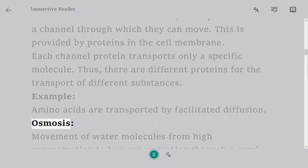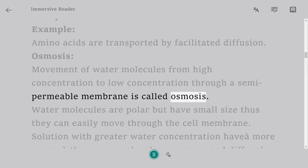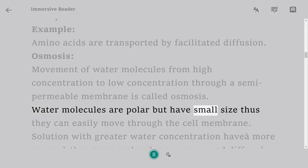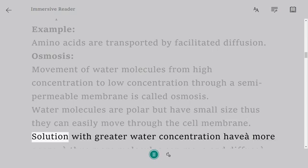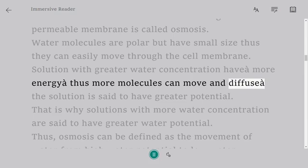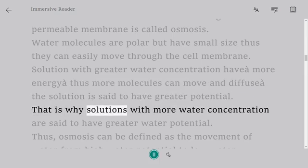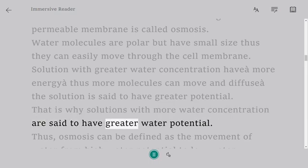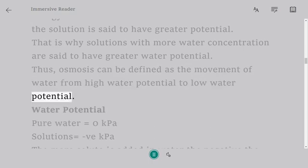Osmosis: Movement of water molecules from high concentration to low concentration through a semi-permeable membrane is called osmosis. Water molecules are polar but have small size thus they can easily move through the cell membrane. Solution with greater water concentration have more energy thus more molecules can move and diffuse. The solution is said to have greater potential. That is why solutions with more water concentration are said to have greater water potential. Thus, osmosis can be defined as the movement of water from high water potential to low water potential.